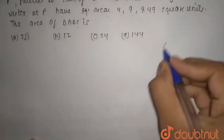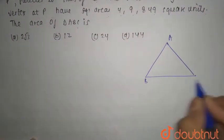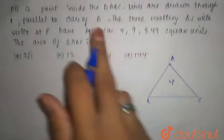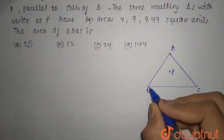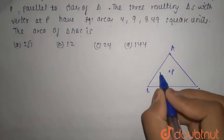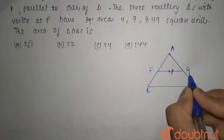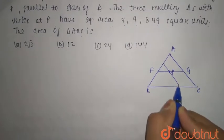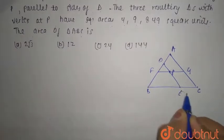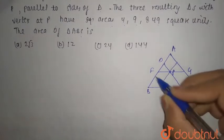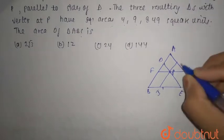First, we have a triangle ABC, and P is a point inside ABC. Lines are drawn through P: one line parallel to BC, which we label FG; another line through P parallel to AC, which we label DE; and a third line parallel to AB, which we label IH.